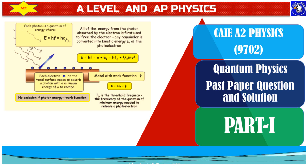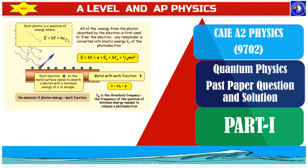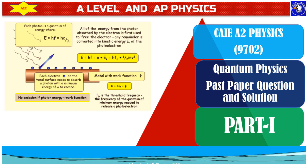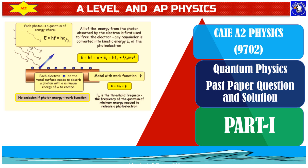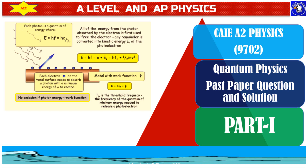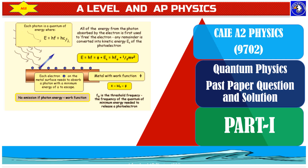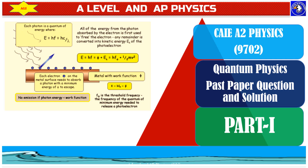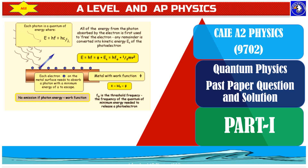Welcome to A-Level and AP Physics, a place where you can improve your understanding of physics with confidence. In this lesson, we will talk about a photoelectric effect past paper question from Cambridge A2 Physics. You will learn how to define photon, how to define work function, and how to calculate the energy of a photon if its wavelength is given. At the end of the video, we will also talk about the basic condition for the emission of photoelectrons from any metal surface.